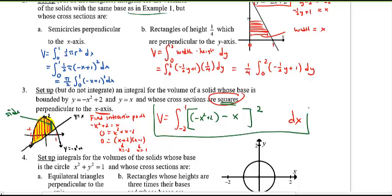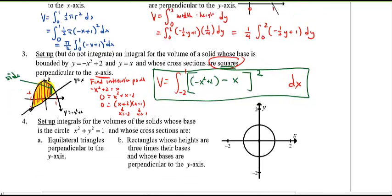So the volume equals the integral from negative 2 to 1 of (negative x squared plus 2 minus x) all squared dx. If you got that, give yourself a pat on the back! If not, press pause now and make those changes. Let's end today's lesson with number four — we saved the hardest for the end.